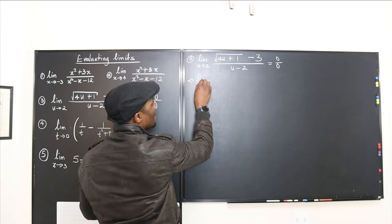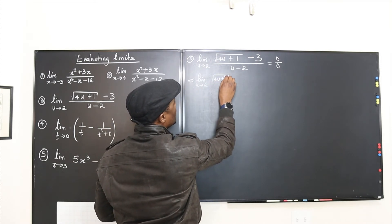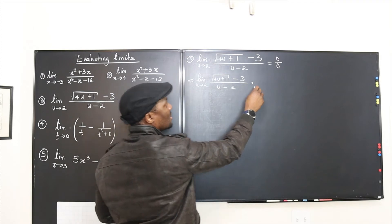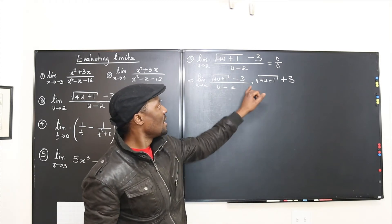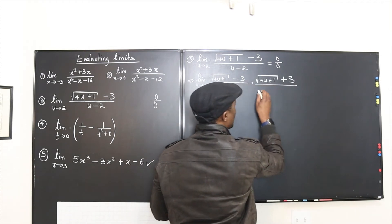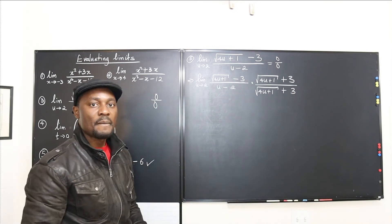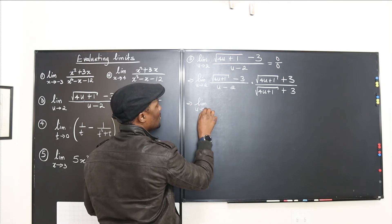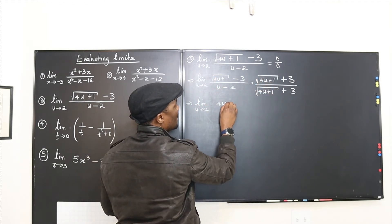So this becomes the limit as u approaches 2 of (√(4u+1) minus 3) over (u minus 2), multiplied by (√(4u+1) plus 3) over (√(4u+1) plus 3). When you multiply the numerator, the square root signs disappear giving 4u plus 1, and the cross terms cancel, leaving 4u plus 1 minus 9.